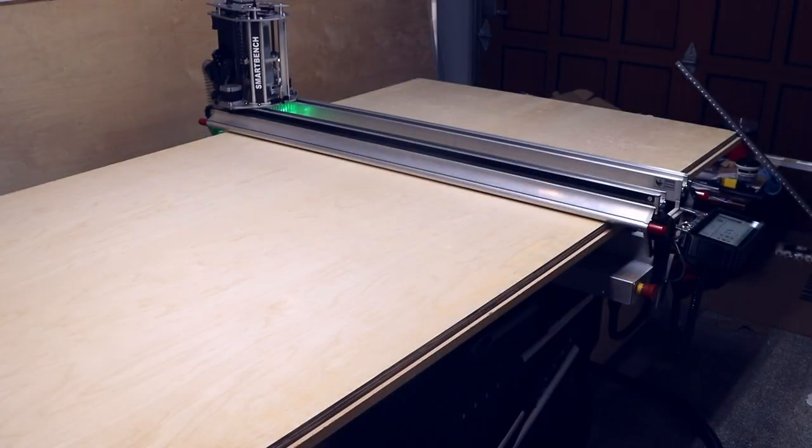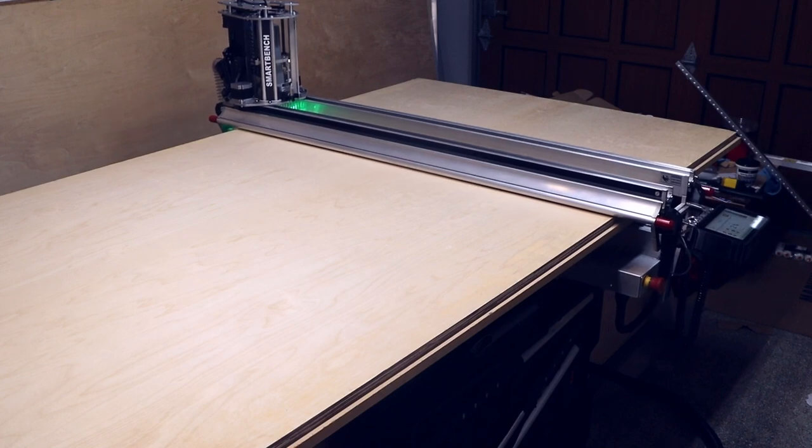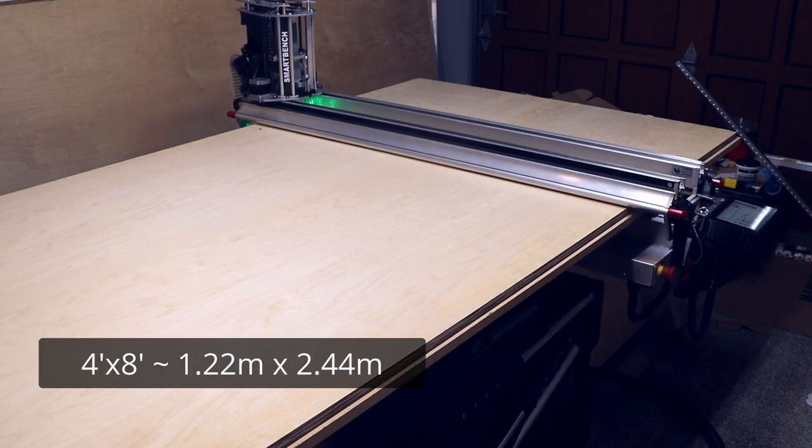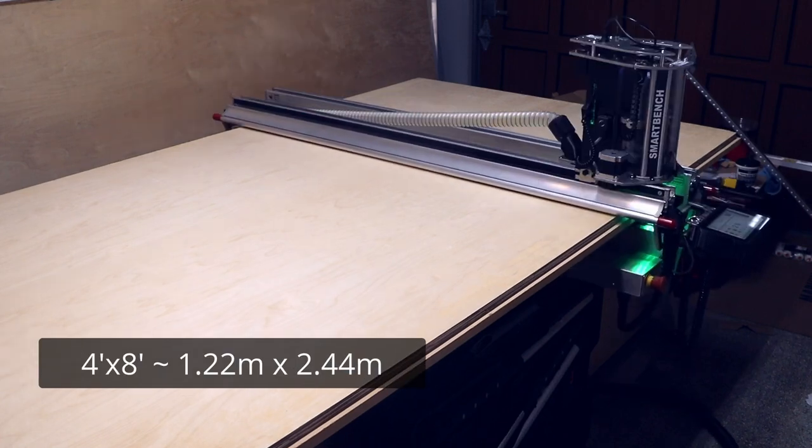In the previous episode I showed designing this floating shoe shelf. In this episode we're going to go to my Yeti SmartBench CNC router, cut out the parts, and then assemble and install them. I started with a full sheet of plywood.